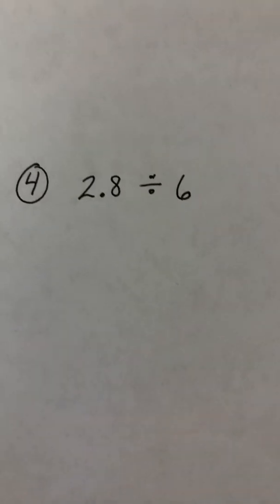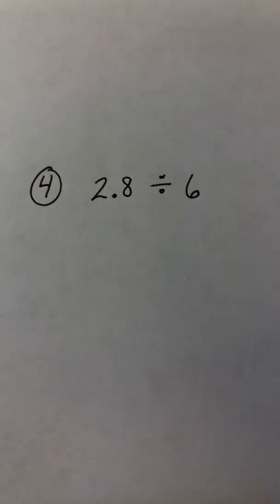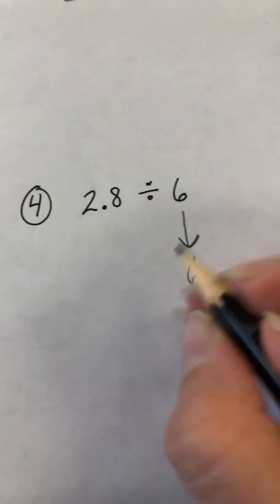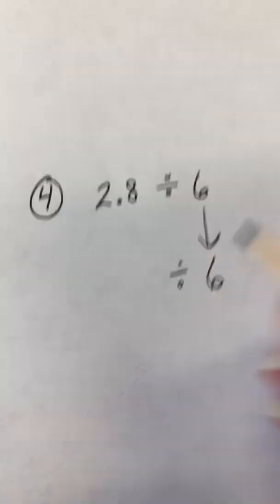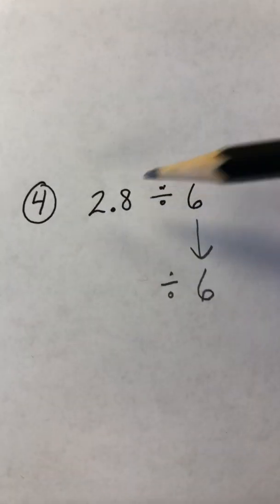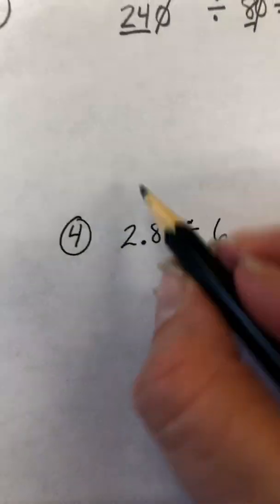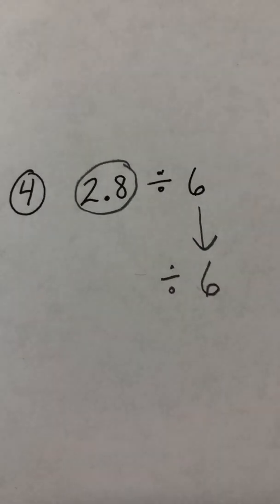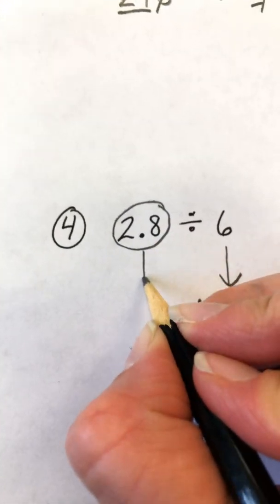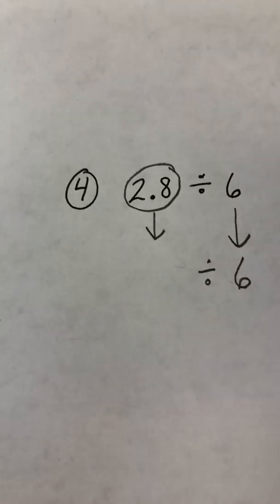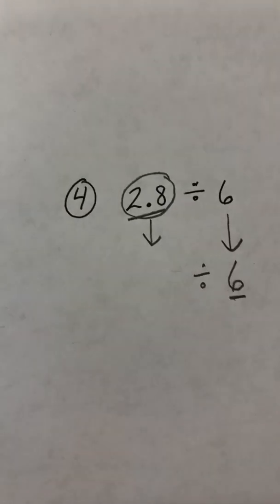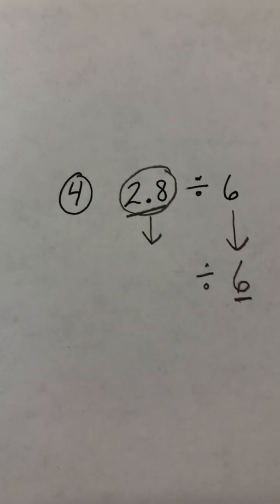One last example. So we have 2 and 8 tenths divided by 6. So again, single digit. It's going to stay a 6. Now, what I'm going to do here, I have 2 and 8 tenths, but I'm just going to think of this as the number 28. Whole numbers are a lot easier to work with, and I'm just going to imagine that it is the whole number 28 for a moment.